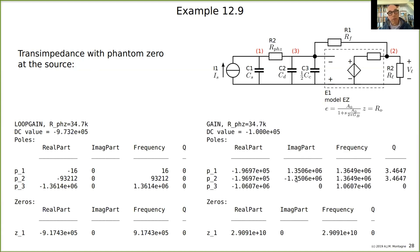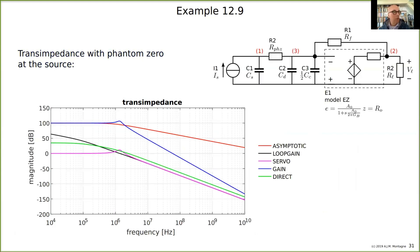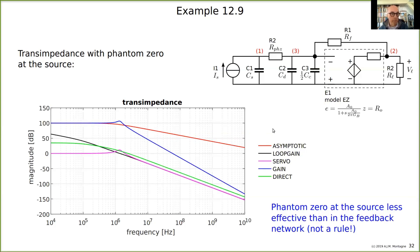After source compensation the quality factor is still more than 0.7, so you would probably need another compensation element. For this transimpedance amplifier, the most effective compensation is a capacitor across Rf. This is not a general rule — you have to study each case. The source phantom zero in this case is less effective than the phantom zero in the feedback network. That's what I wanted to show you.